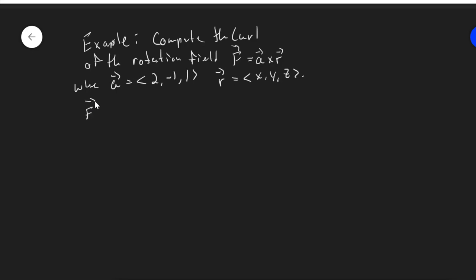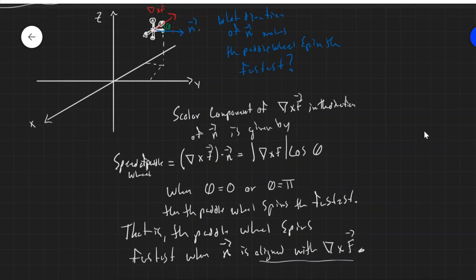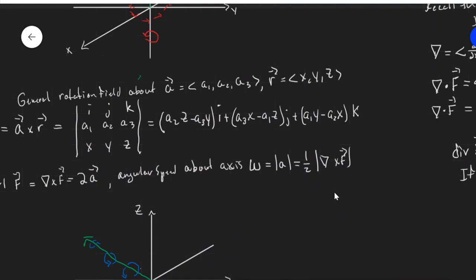Let's find our vector field f first. So remember, in general, if I give a rotation field with a and r, we find that by computing a cross r. Actually, I'm not going to go to the determinant. I'm just going to write it down from the formula. We don't have to go through all that.